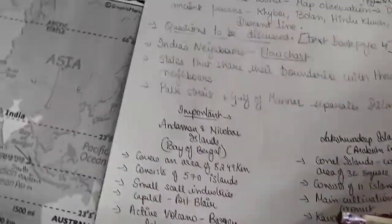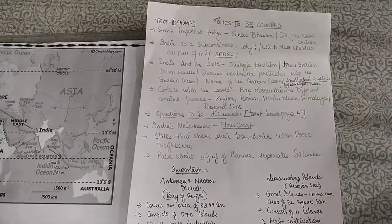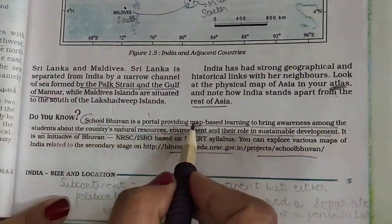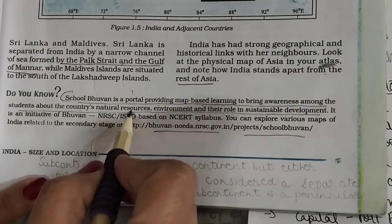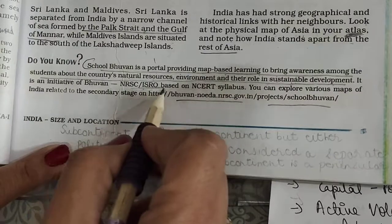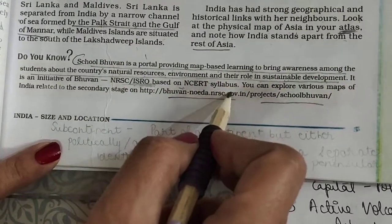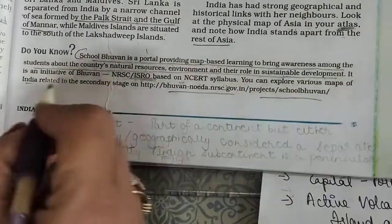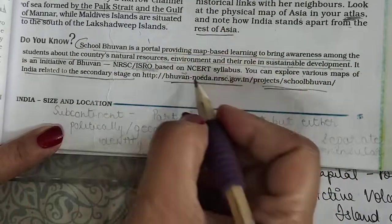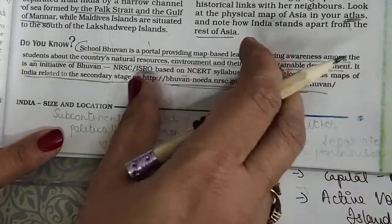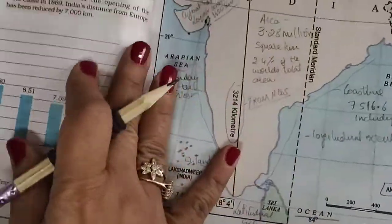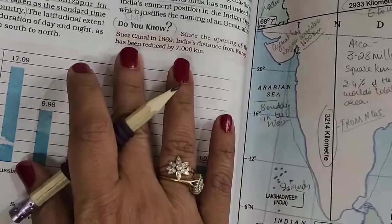Now some important things from the 'Do You Know' section. Bhuvaan is a portal providing map-based learning to bring awareness among students about the country's natural resources, environment, and their role in sustainable development. It is an initiative of Bhuvan, NRSC, and ISRO. You can explore various maps of India related to the NCERT syllabus. When you want to do any map-learning related to your NCERT book, you can log in and go through all the maps for all topics — it's a very good site.